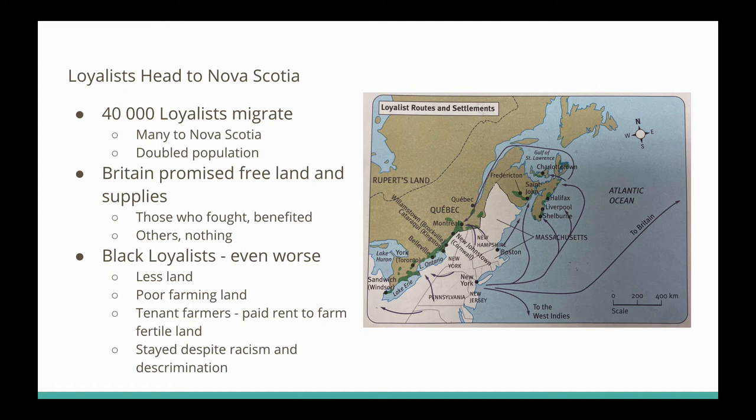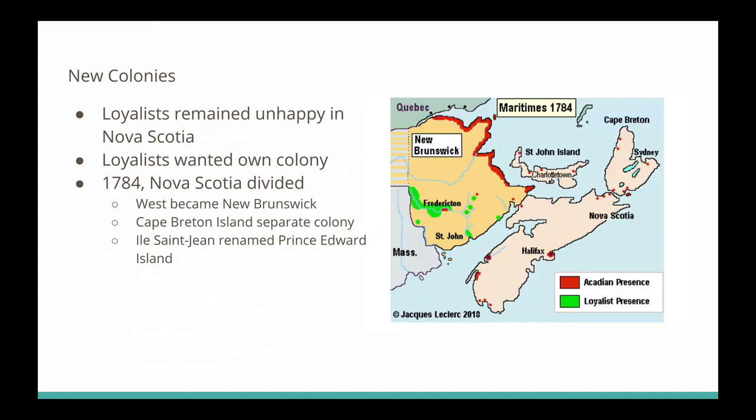Doubling the population led to unhappiness among many Loyalists. They didn't feel at home in Nova Scotia and wanted their own colony under British rule. So in 1784, Nova Scotia was divided in two: the west side became New Brunswick and the east side remained Nova Scotia. Cape Breton Island became its own separate colony, and Isle Saint-Jean was renamed Prince Edward Island — all of which still exist today.